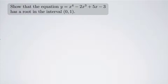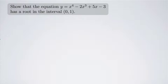Show that the equation y equals x to the fourth minus 2x cubed plus 5x minus 3 has a root in the interval (0, 1). What does it mean to have a root? That means that it crosses the x-axis somewhere in that interval. We have to show that it crosses the x-axis at least once — it could have more than one root, but we need to show at least one.